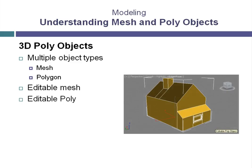There are also editable poly objects. The major difference between editable mesh and editable poly is that the editable poly objects can be made up of multi-sided polygons and have a much more advanced set of editing tools available that make 3D poly modeling considerably more advanced than the editable mesh.